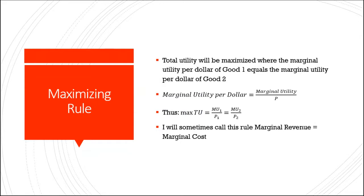If Jose is trying to maximize his total utility, then mathematically that is where the marginal utility per dollar of good one — movies — equals the marginal utility per dollar of good two — t-shirts. What that means is one additional unit of t-shirt consumption is going to bring him the same utility as one additional movie.